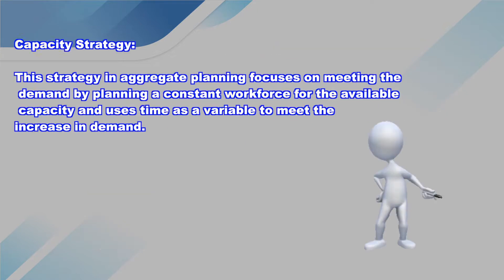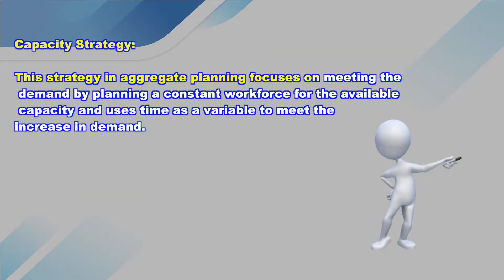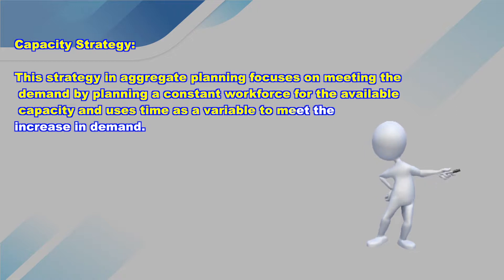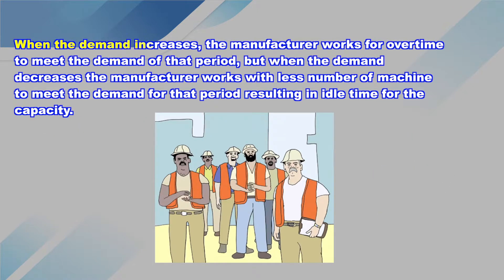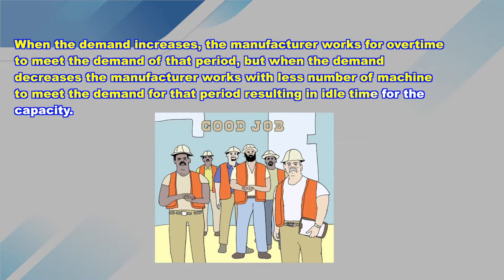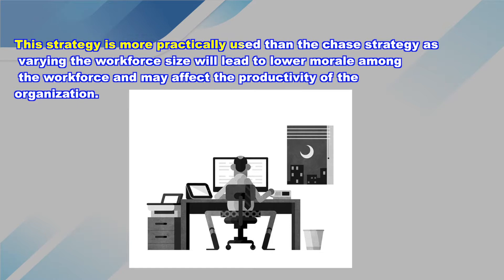Capacity strategy: this strategy in aggregate planning focuses on meeting the demand by planning a constant workforce for the available capacity, and uses time as a variable to meet the increase in demand. When the demand increases, the manufacturer works overtime; when demand decreases, the manufacturer works with fewer machines, resulting in idle time. This strategy is more practically used than the chase strategy, as varying the workforce size lowers morale and may affect productivity.